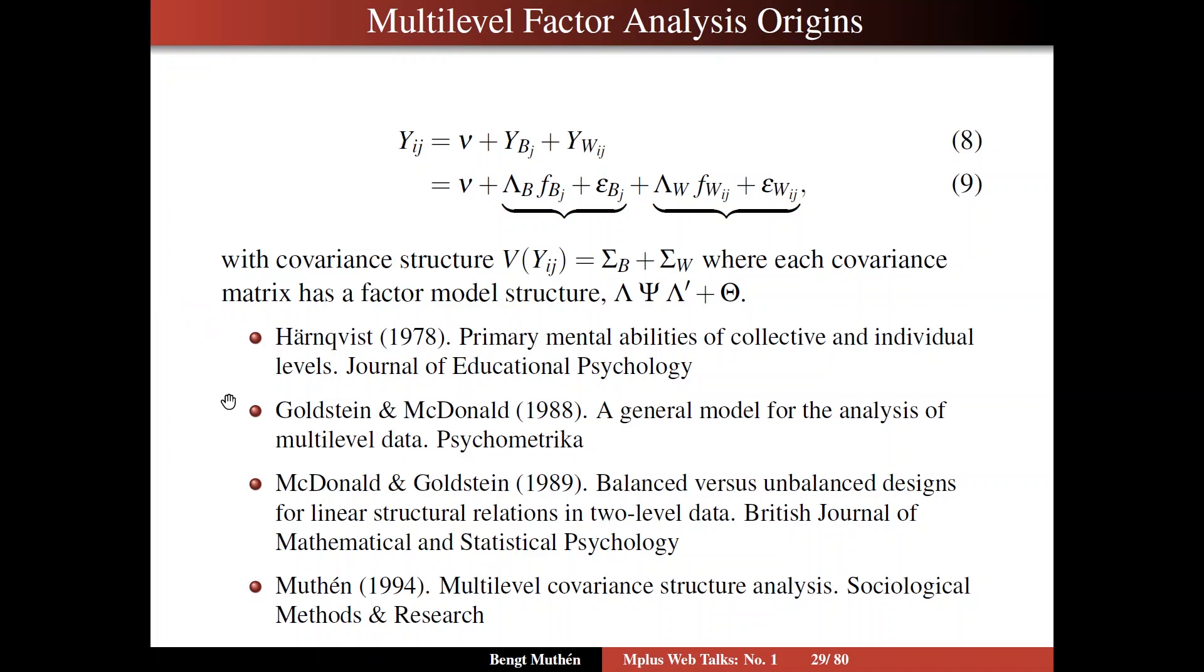And much later, a decade later, a statistician jumped in. Harvey Goldstein and Rod McDonald wrote a paper in Psychometrika, where they looked at these covariance structures on between and within. And then McDonald and Goldstein came back and made a publication in the British Journal of Mathematical and Statistical Psychology.